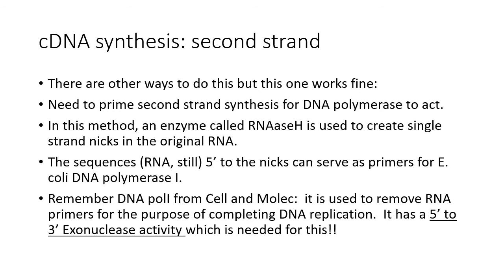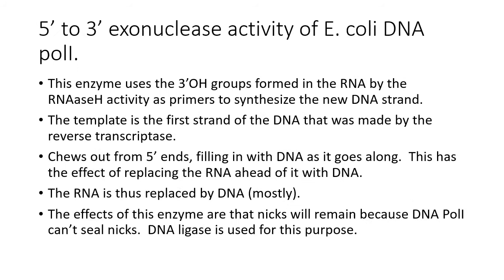DNA Pol I from E. coli has not just DNA polymerase activity — it has a 5'→3' exonuclease activity, which is important for this reaction. We use the 3' hydroxyls in the RNA as primers, and the template is the first strand of DNA that was made. The 5'→3' exo activity allows Pol I to chop out nucleotides ahead of itself while filling in with DNA as it goes along — replacing the RNA with DNA — ultimately creating the second strand of DNA.